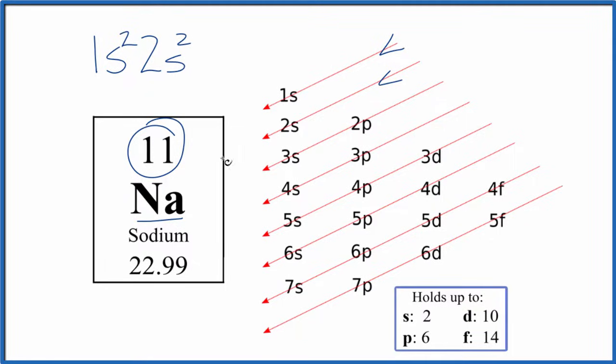We have 11. So we go to 2p. P can hold up to 6. So we'll put 6 there. We have 10. We only need one more. Down to our 3s. And we said s can hold two. But we only need one to get 11. That's the electron configuration for sodium.